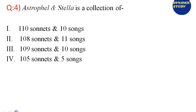Next question: Astrophil and Stella is a collection of how many sonnets and songs? Option 1, 110 sonnets and 10 songs. Option 2, 108 sonnets and 11 songs. Option 3, 109 sonnets and 10 songs. Option 4, 105 sonnets and 5 songs. This kind of question is often asked in the Net exam — whenever you encounter a sonnet sequence, remember how many sonnets and songs it contains. The right answer is option number 2: 108 sonnets and 11 songs.